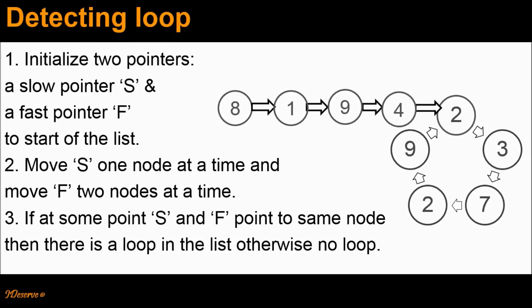We are going to use this algorithm. In this algorithm, the first step is we initialize two pointers: a slow pointer S and fast pointer F to the start of the list. In the second step, we move pointer S one node at a time and we move pointer F two nodes at a time.